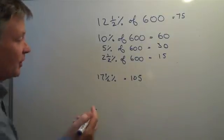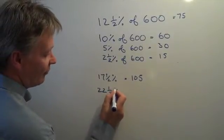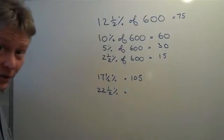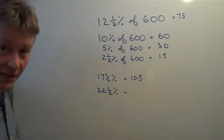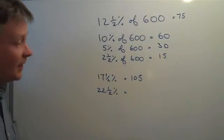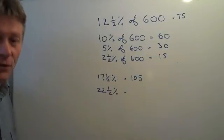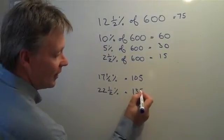Likewise, we could calculate something like 22.5%, which would be the sum total of 2 lots of 10%, which is 60 plus 60, which is 120, plus 2.5%, which is 15. So 120 plus 15 is 135.